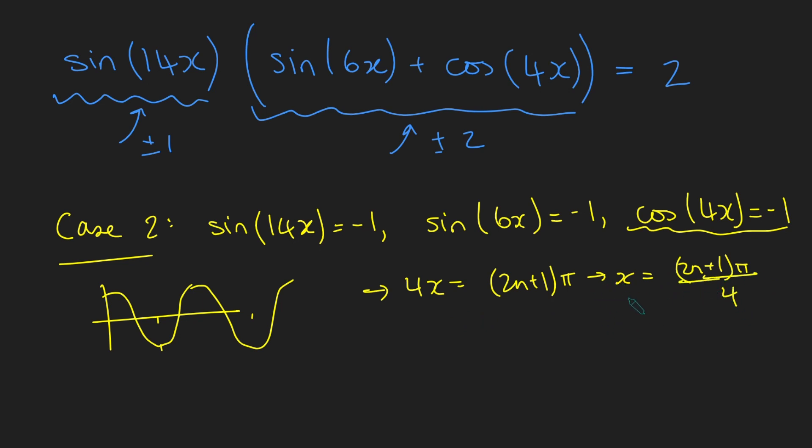And so this tells us that x must be 2n plus 1 pi over 4. But remember, x is somewhere between 0 and 2 pi. So there's actually only a few values of n that we could have here. So maybe n is 0, in which case we get pi over 4. Or if n is 1, we get 3 pi over 4. Or if n is 2, 5 pi over 4. Or if n is 3, we get 7 pi over 4. The next one would be 9 pi over 4, but that's bigger than 2 pi, so we're not interested.